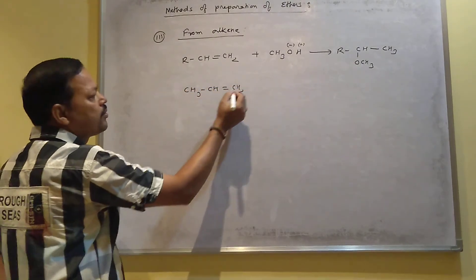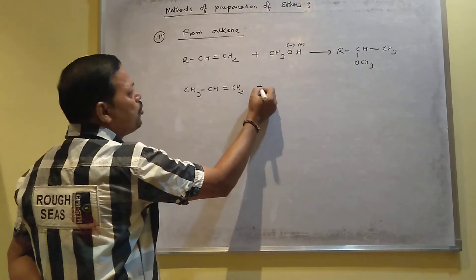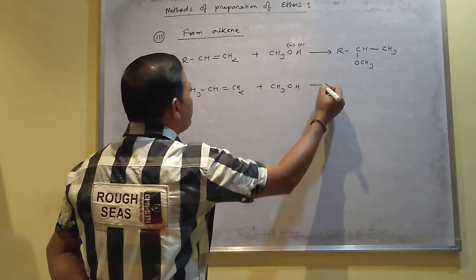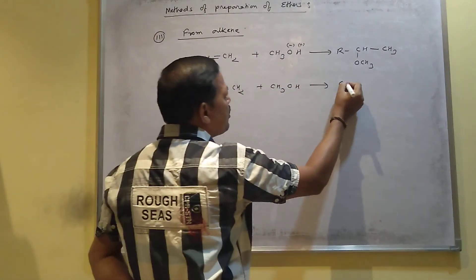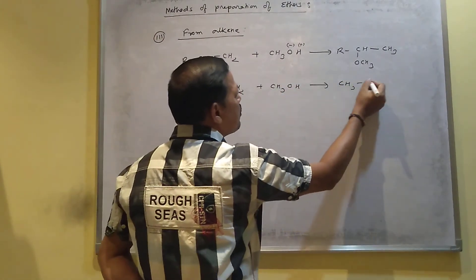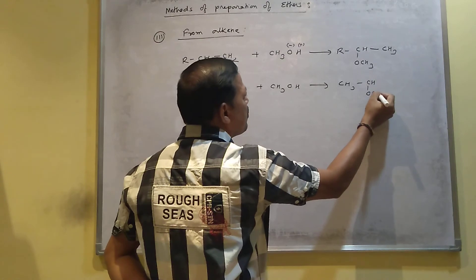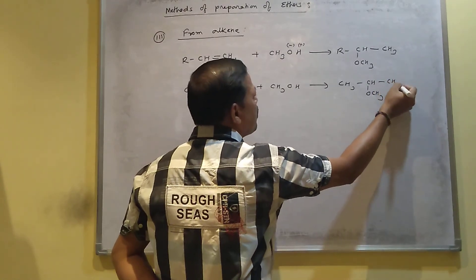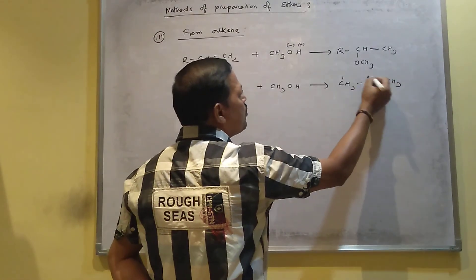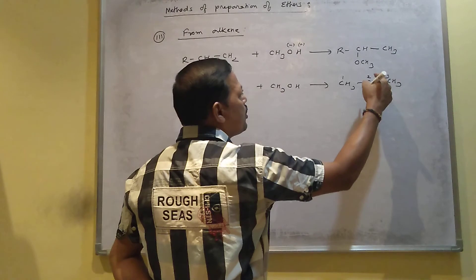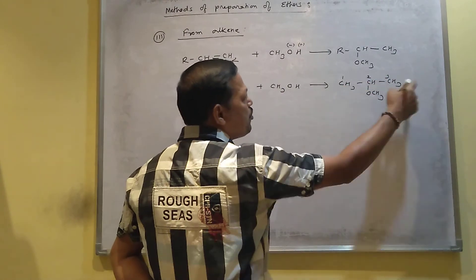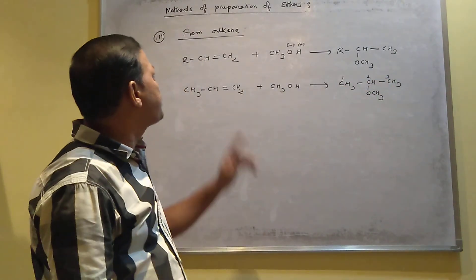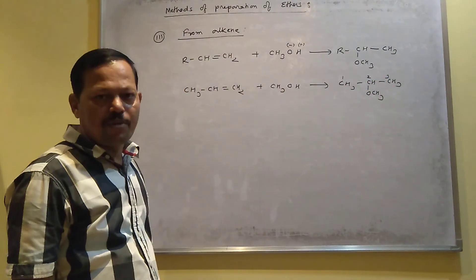For example, when propene is treated with methanol, the product is 2-methoxypropane (1,2,3 — 2-methoxypropene). This is how you can prepare ethers by the third method — addition of alcohol to an alkene following Markovnikov's rule.